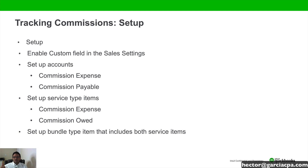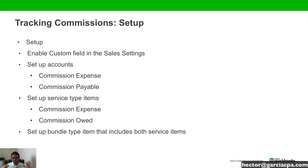The setup is the following. First, we have to make sure that we have the custom field for sales rep in our sales settings. Then we need to make sure that we have a commission expense account and a commission liability payable account. Then we're going to have items or products that map to that commission expense account and that commission payable account. Then we're going to set up a bundle — similar to the method for other types of sales — where we want to create more than one item in the same transaction but hide the details.